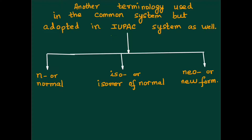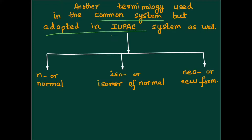There are three more terms we are going to talk about: N, ISO, and NEO. N stands for normal, ISO means isomer of normal, and NEO means new. You cannot ignore this system because although it is a common system, it is definitely adopted and adapted by the IUPAC system as well. So we are going to talk about these three terms.